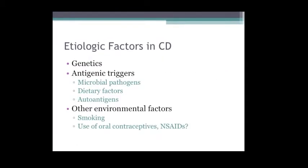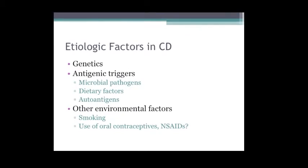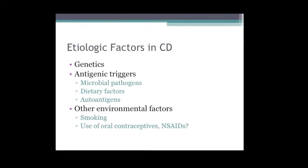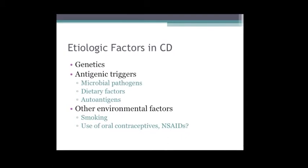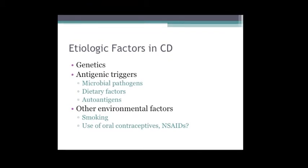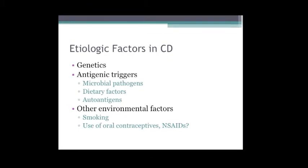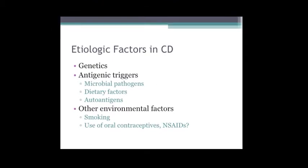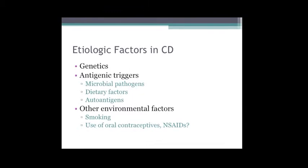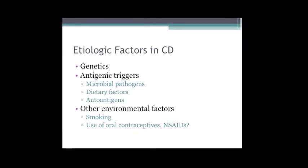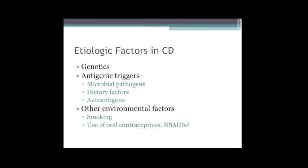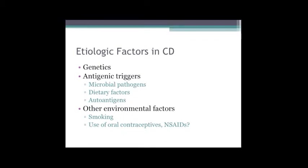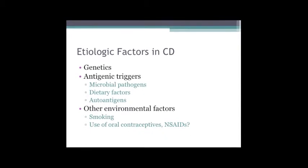Etiologic factors in Crohn's disease include genetic abnormalities - about 15% of patients will have a positive family history of IBD. There are antigenic triggers such as microbial pathogens, dietary factors, and smoking. There's also thought that use of oral contraceptives and NSAIDs may predispose one to Crohn's disease, and there's a growing body of literature on Accutane, more so with ulcerative colitis but also with Crohn's.